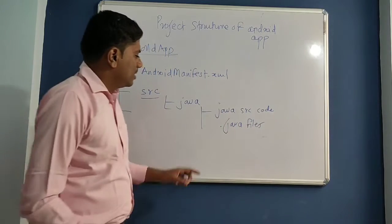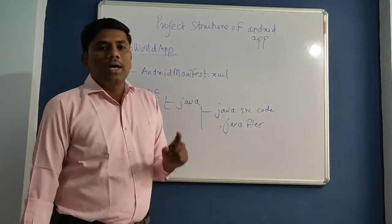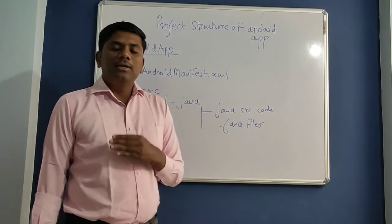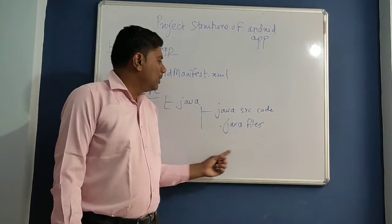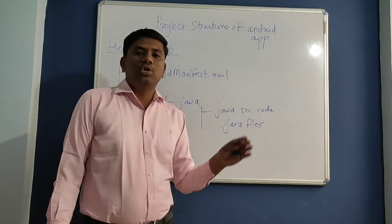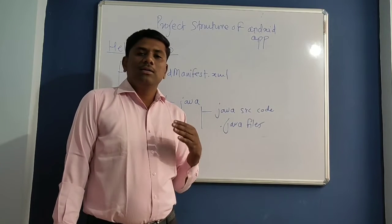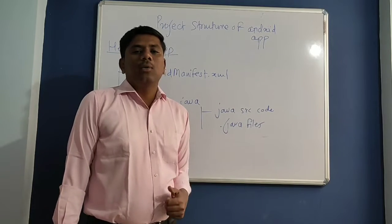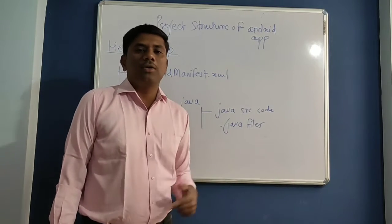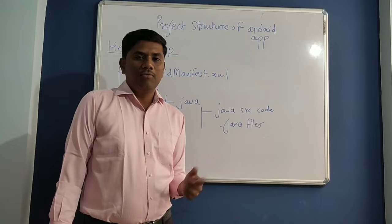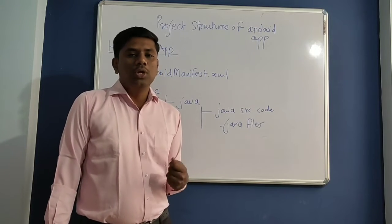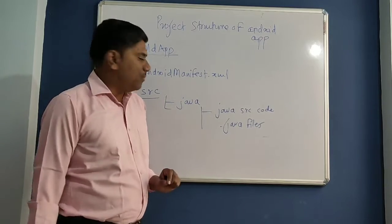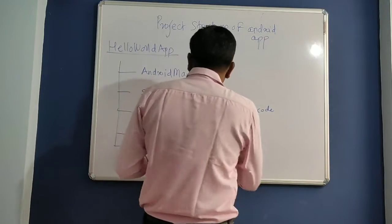Suppose I have three activities — first activity, second activity, third activity — then I will have three Java files: First.java, Second.java, Third.java. In those files we can write our logic — what our activity will do, what our application will do. That logic part will be present in the .java files.